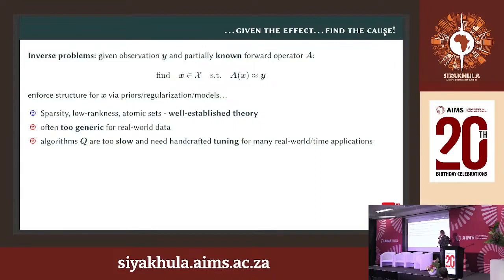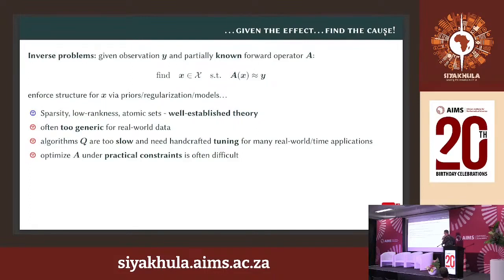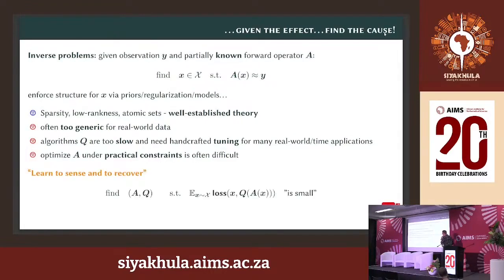Another problem is that if we want to reconstruct with an algorithm Q, for inverse problems these algorithms are often not very fast. One needs to tune them with a lot of hyperparameter tuning, making it impossible to use them for real-time applications. Additionally, the observation model — how we acquire data — could also be optimized under practical constraints, such as whether it should be a sensing device or detector. But optimizing this under physical or engineering constraints is also very difficult.